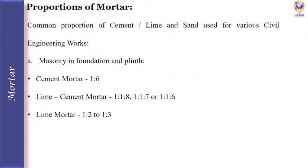Some common proportions of cement, lime, and sand used for civil engineering works: for masonry work in foundation and plinth, the cement mortar ratio is 1:6 (one part cement, six parts sand). Lime cement mortar ratios are 1:1:8, 1:1:7, or 1:1:6. Lime mortar ratio is 1:2 to 1:3 (one part lime, two or three parts sand).